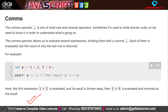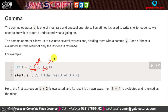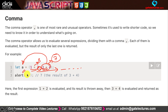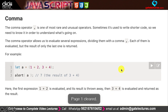The comma operator evaluates multiple expressions and returns the result of the last one. For example, in a = (1+2, 3+4), first 1+2=3 is evaluated, then 3+4=7, and a stores 7. Operator precedence and associativity is an important topic in JavaScript because some operators behave differently here compared to other programming languages.